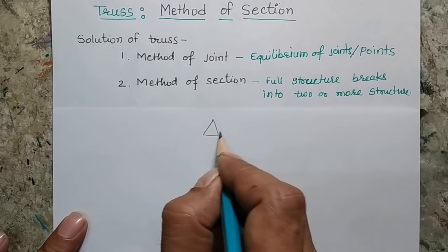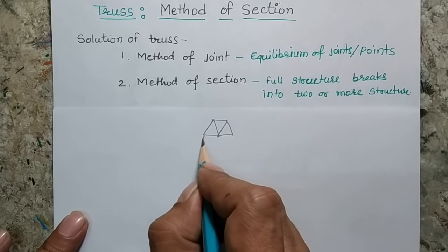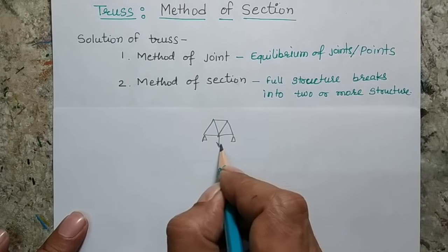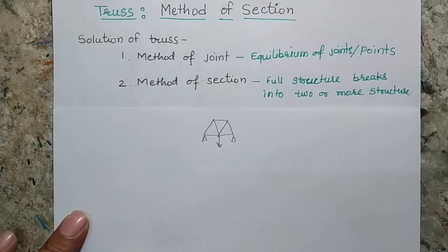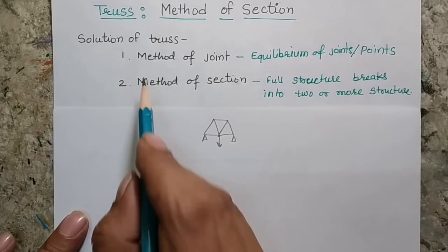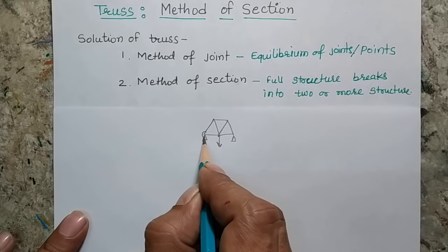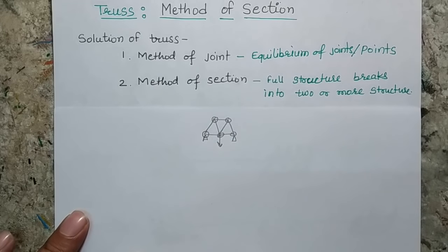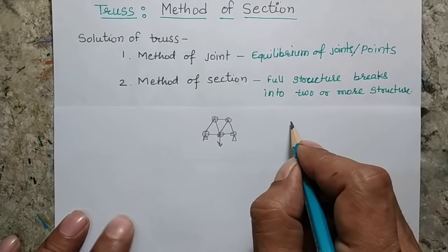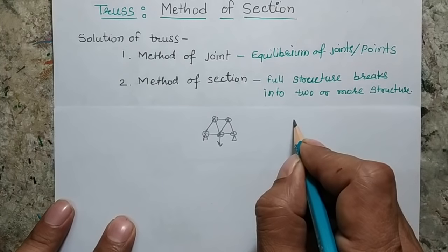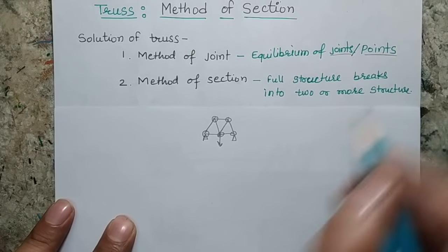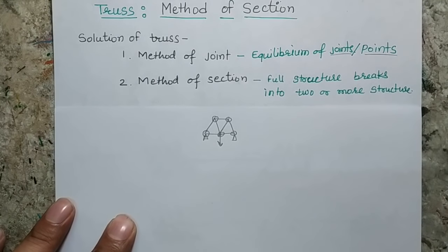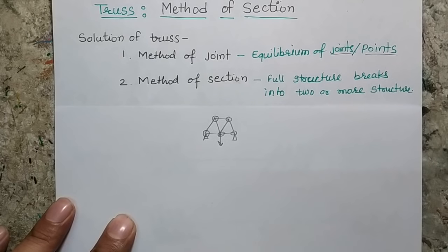For example, if I have a truss and I am applying certain forces on it, my interest in the case of the method of joint is finding the equilibrium of all the joints. I write the equation for the equilibrium of joints or points where the forces are concurrent. If I am considering a planar truss, the problem becomes a coplanar concurrent force system.